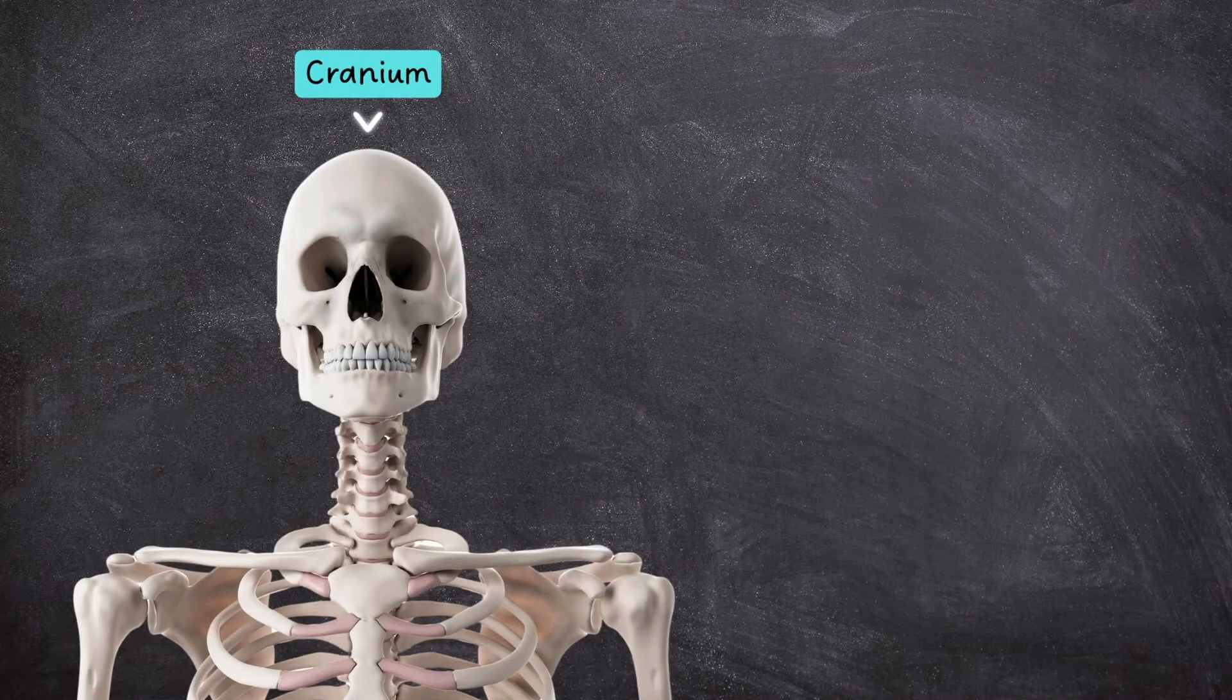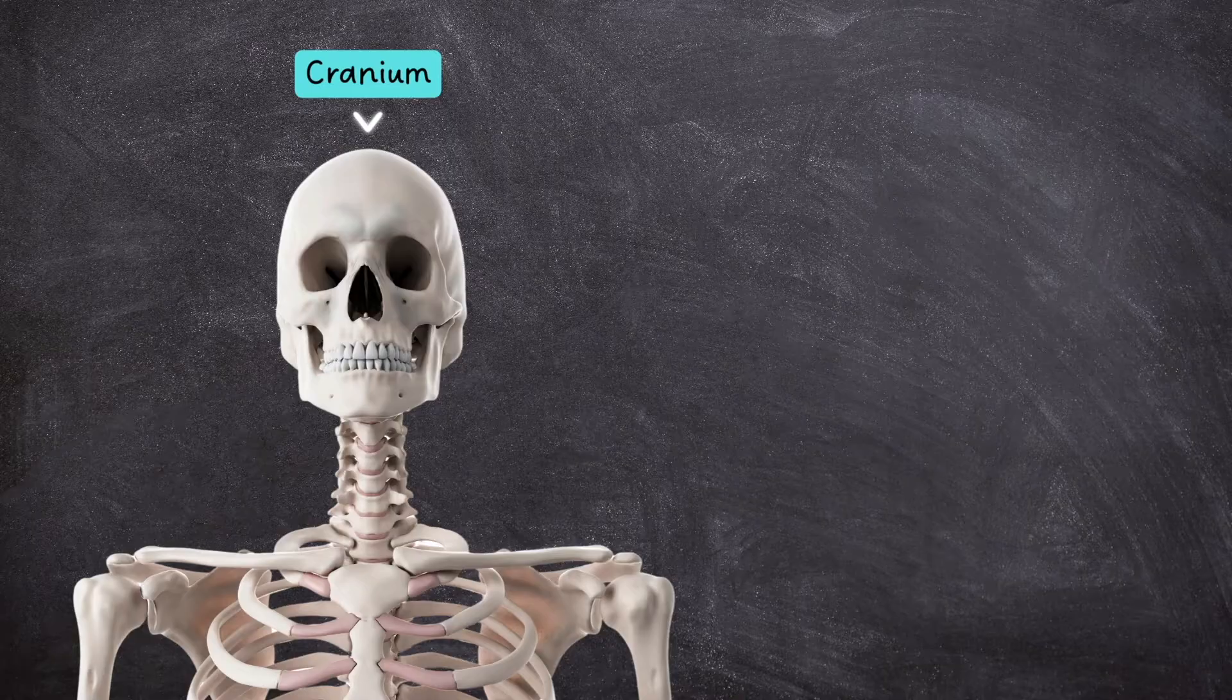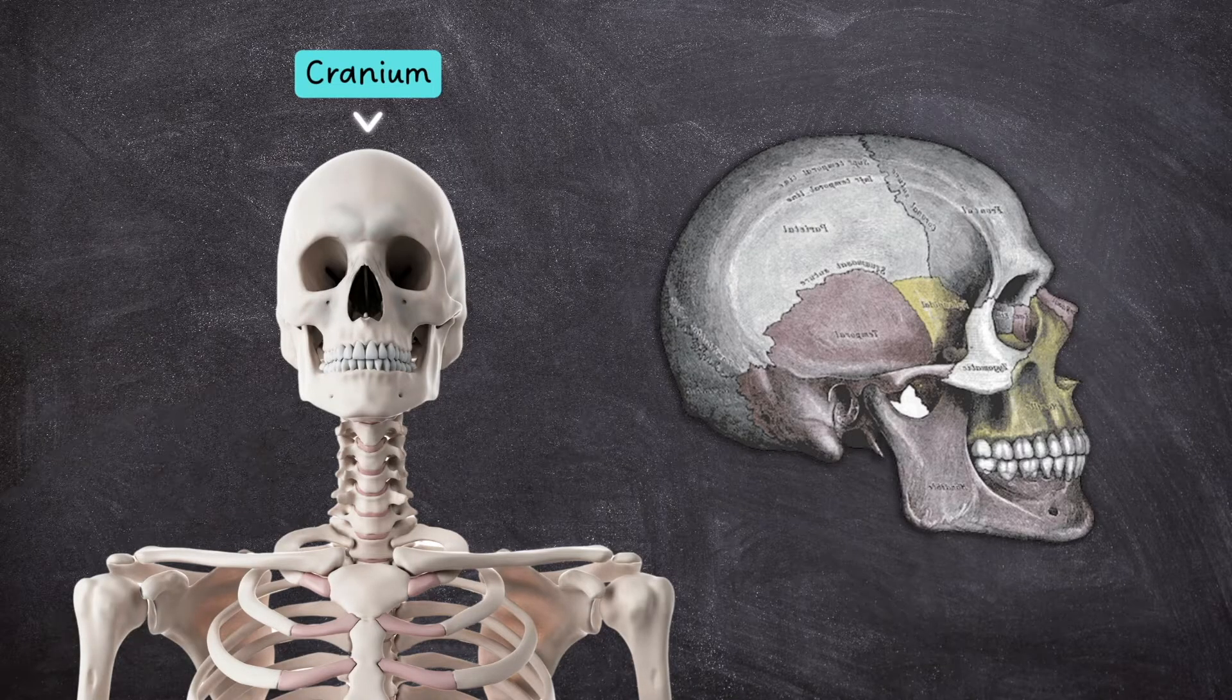The cranium, commonly known as the skull, is composed of several flat, plate-like bones that fuse together at around the age of two in humans.